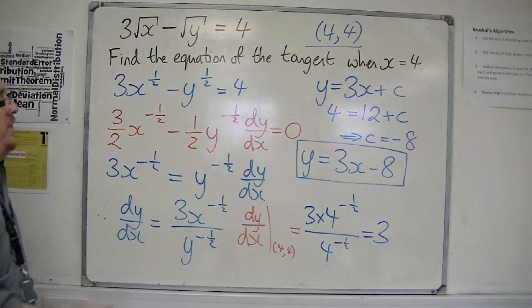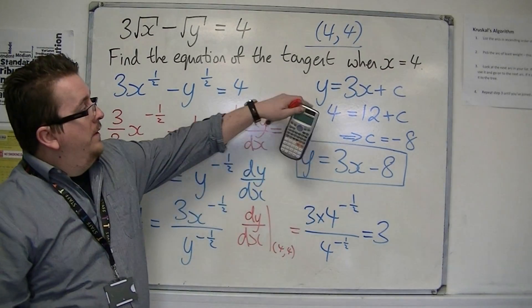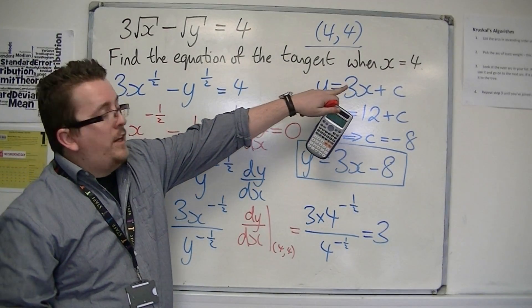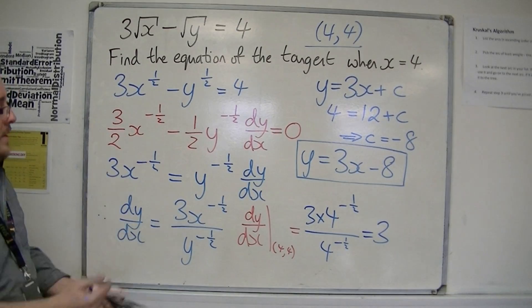And that's how you can use implicit differentiation and an original x-coordinate to find everything else that you need.